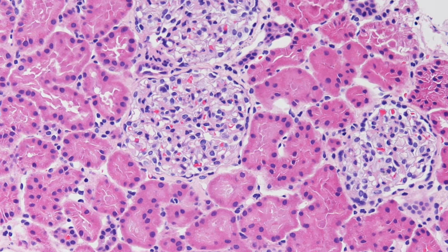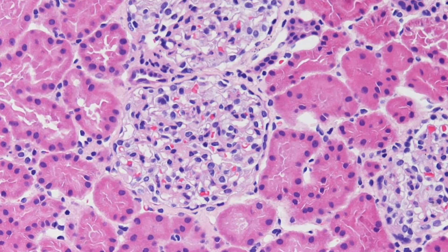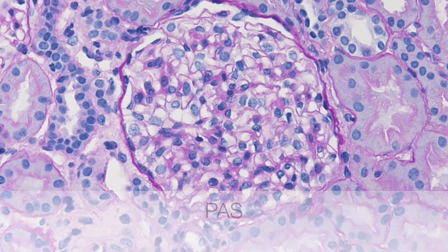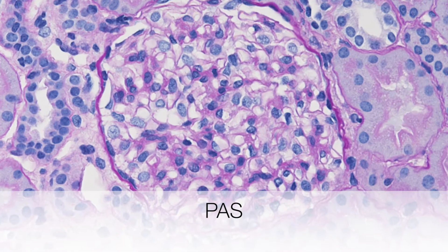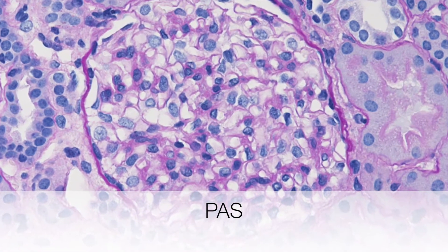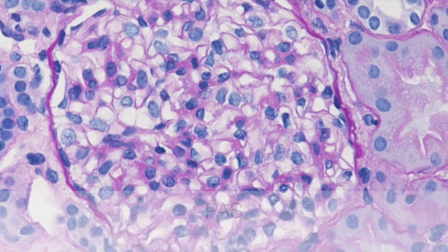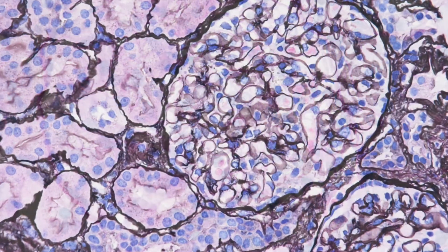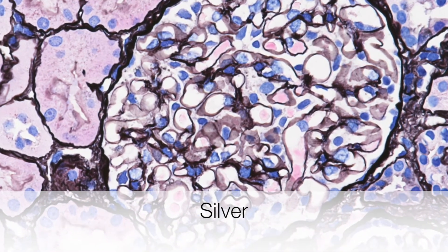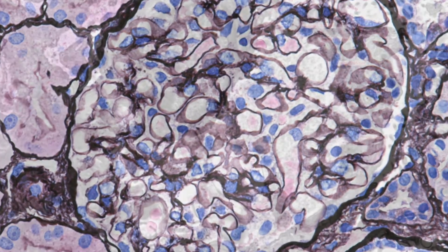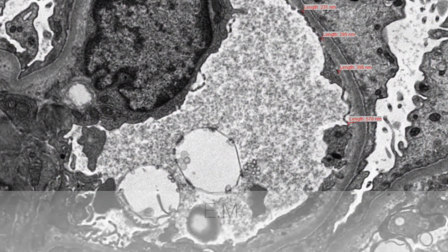This is the H&E stain. This is the PAS. This is the silver stain. And this is the electron microscopy.